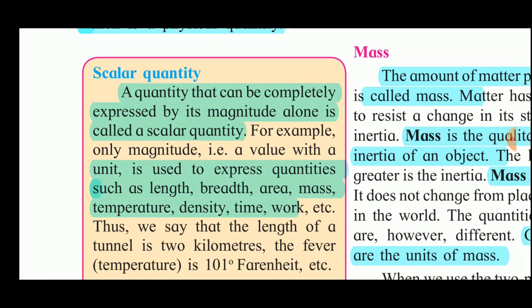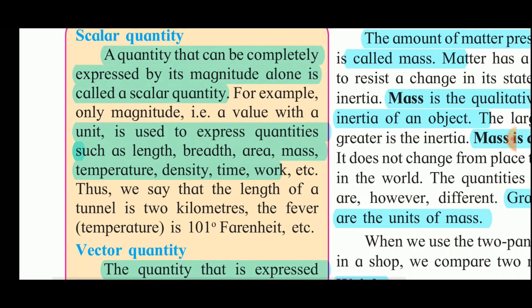A quantity that can be completely expressed by its magnitude alone is called a scalar quantity. Only magnitude — that is, the value with the unit — is used to express scalar quantities such as length, breadth, area, mass, temperature, density, time, and work. For example, the length of a tunnel is 2 kilometers, where 2 is the value and kilometer is the unit. Fever is 101 degrees Fahrenheit, where 101 is the value and Fahrenheit is the unit. Such quantities are called scalar quantities.